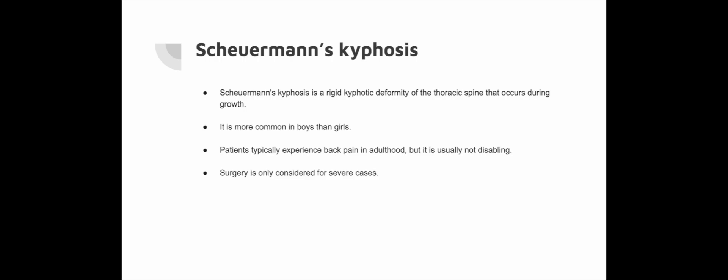Scheuermann's kyphosis is a growth disorder characterised by an exaggerated curvature of the thoracic spine. It typically develops during adolescence and is more prevalent among boys. While individuals may experience back pain in adulthood, it is typically not debilitating. Braces, exercise therapy and medications are sometimes prescribed for growing children and adolescents, but there is no indication for a corset or brace in adults. Surgical intervention may be considered for larger symptomatic deformities, but these operations carry a fairly high complication risk. Surgery can be performed via a posterior approach, but some patients also require an anterior approach to remove the intervertebral disc and increase spinal mobility for optimal correction.